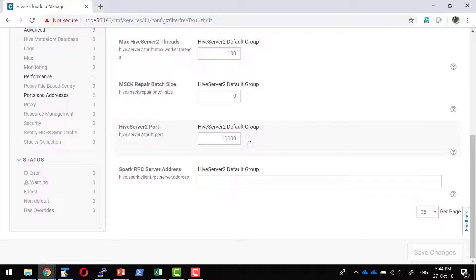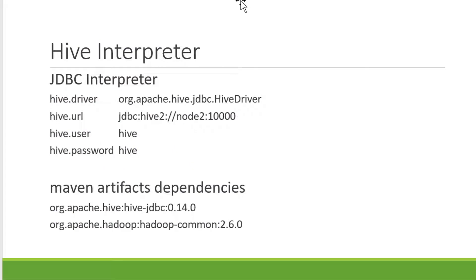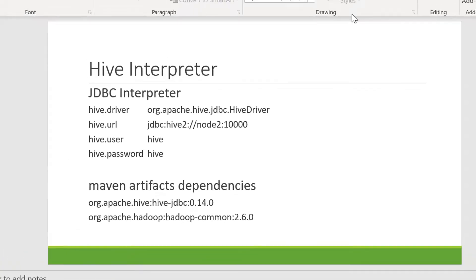If you connect with the Hive administrator, they will provide the thrift server URL, user ID, and password. I'll be creating a Hive interpreter with the following details: the driver, URL, user, and password. I'll provide the Maven artifacts — the Hive JDBC and Hadoop Common JAR files, which are required to access the Hive driver. Otherwise it will give a 'Hive driver class not found' exception.